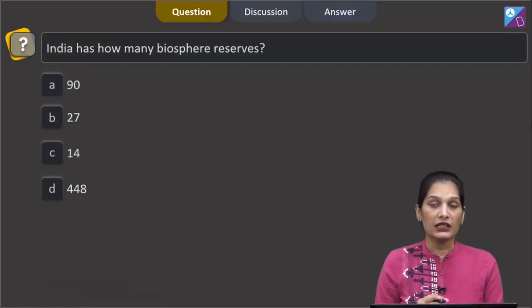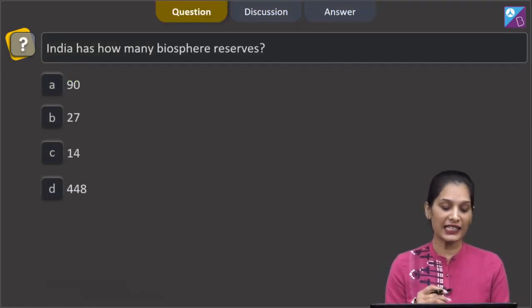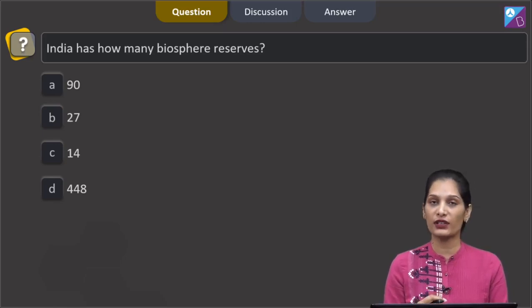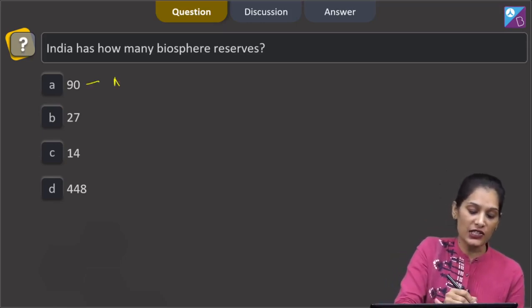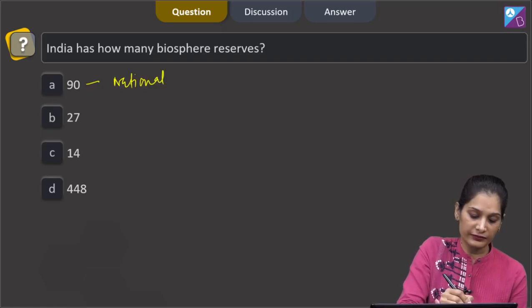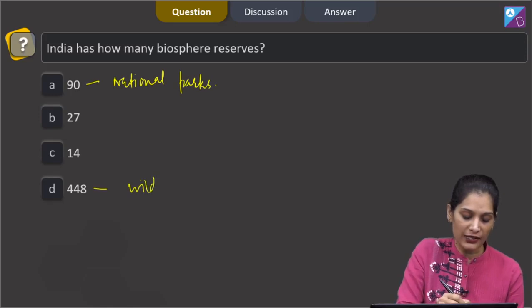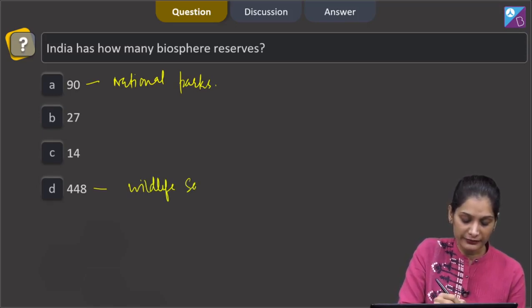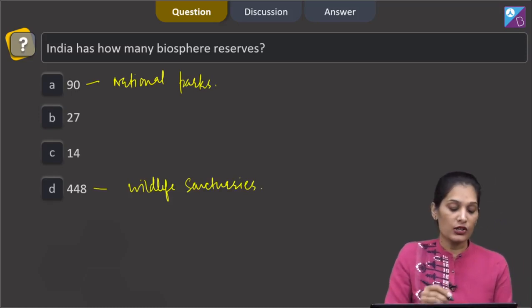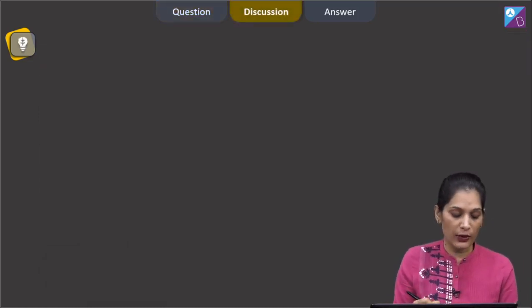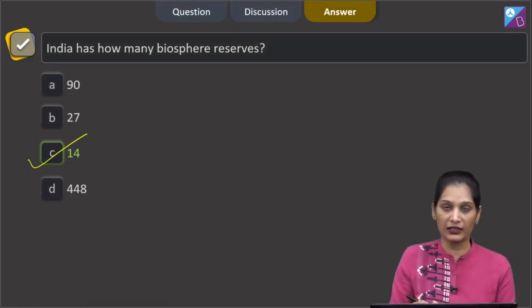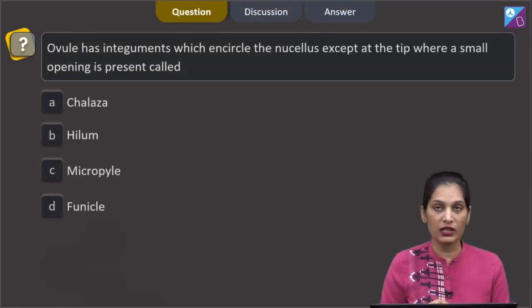Let's move to the next question. This question says: India has 14 biosphere reserves, whereas 90 national parks and 448 wildlife sanctuaries. So the correct option for the given question is c, that is 14.